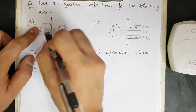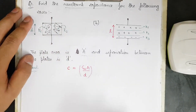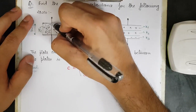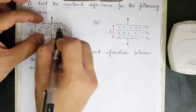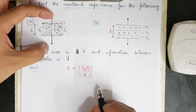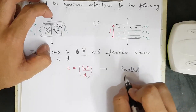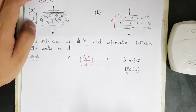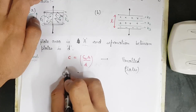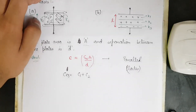We need to decide whether the two capacitors — the first one and the second one — are in series or in parallel. You can see that the potential is the same for both capacitors because they are connected between the same plates. Same potential implies they are in parallel, so C_eq = C1 + C2.